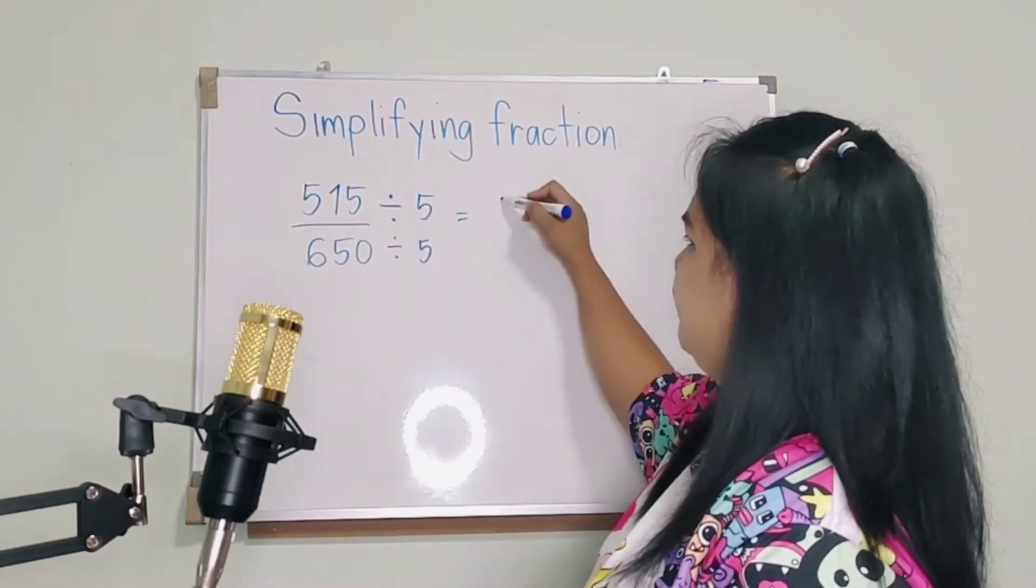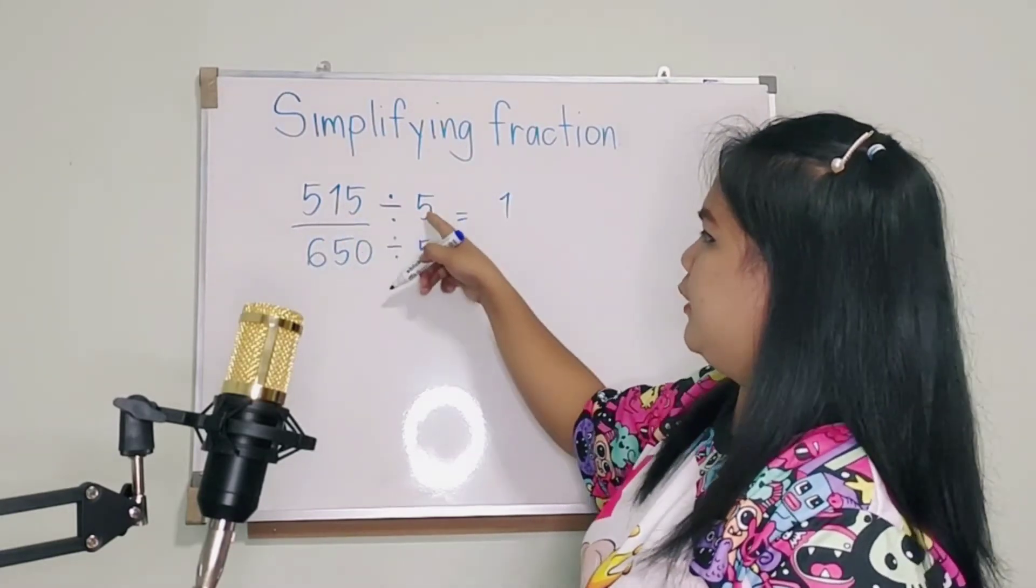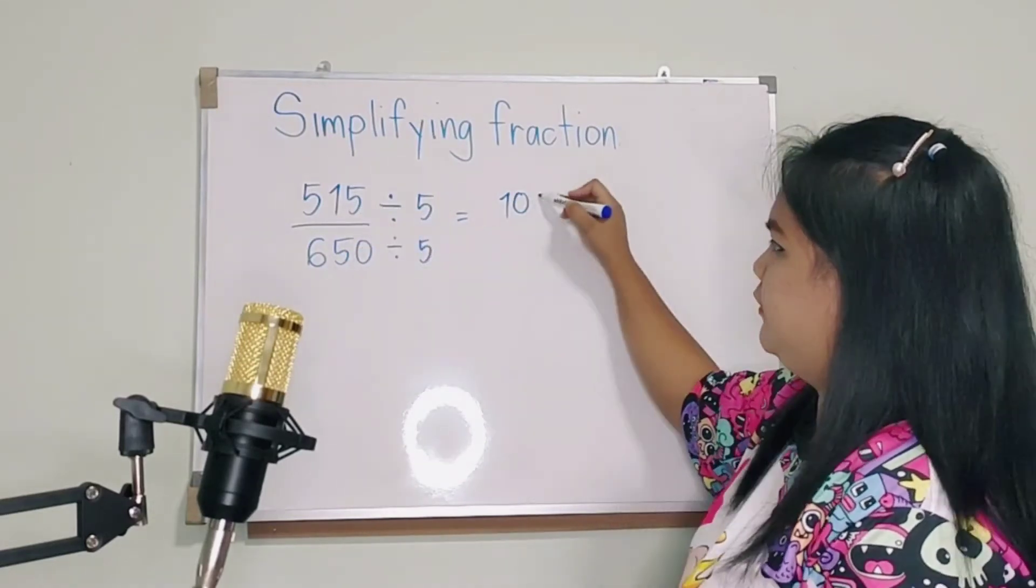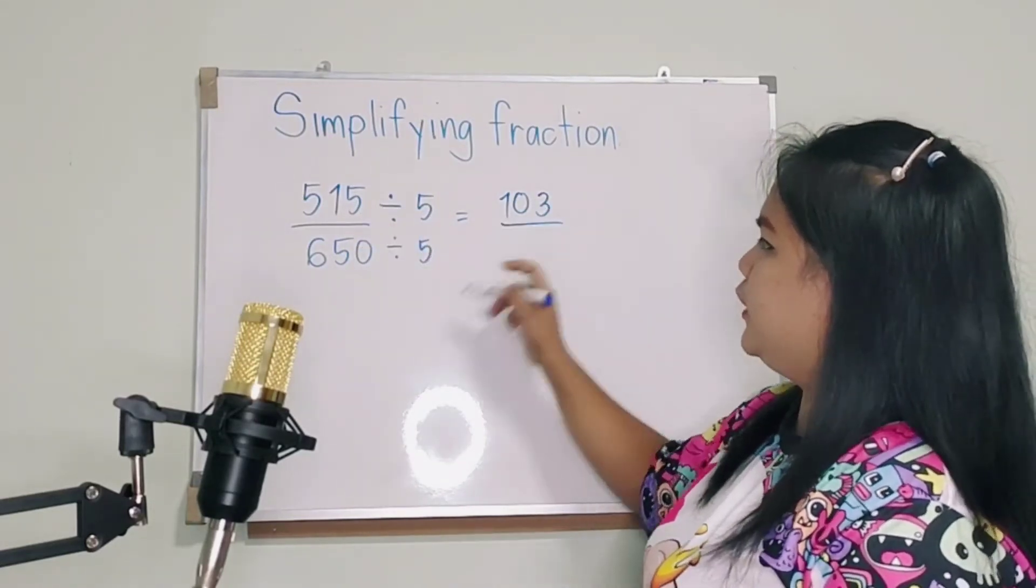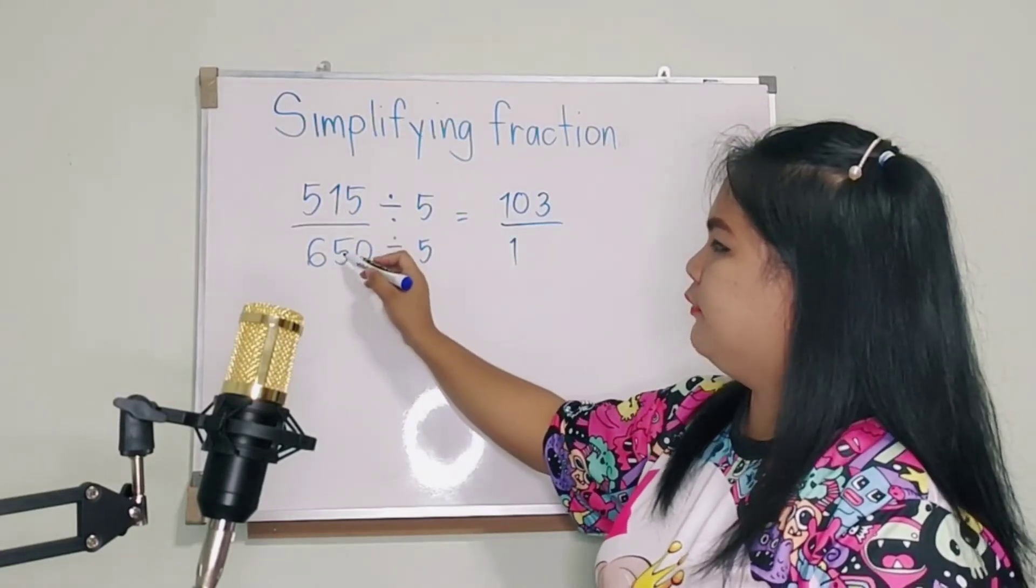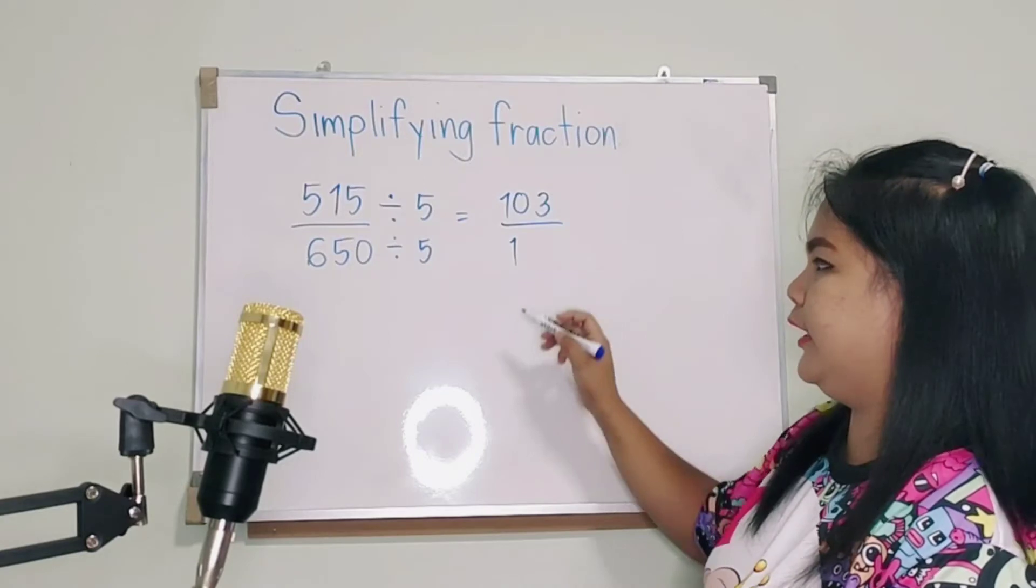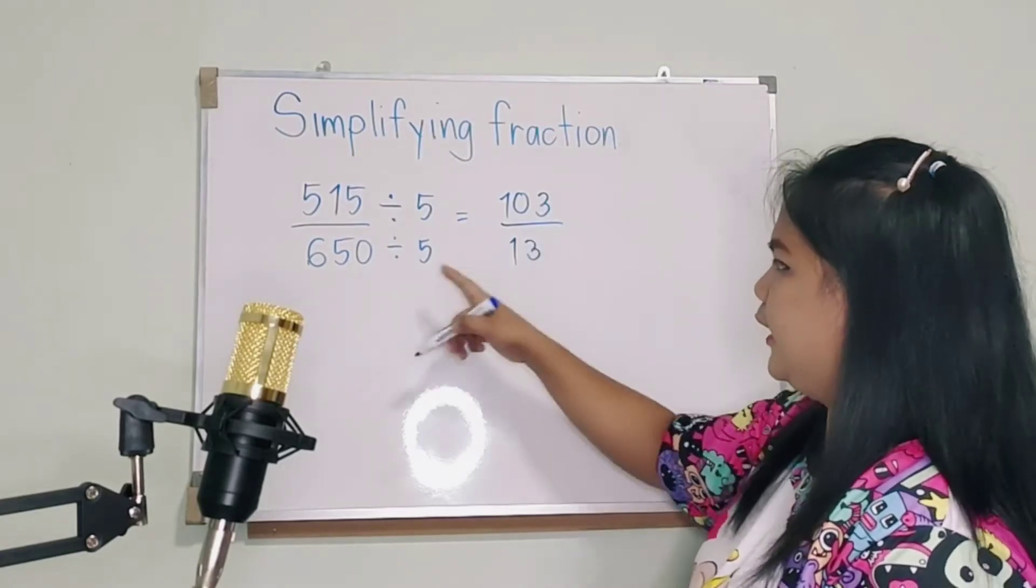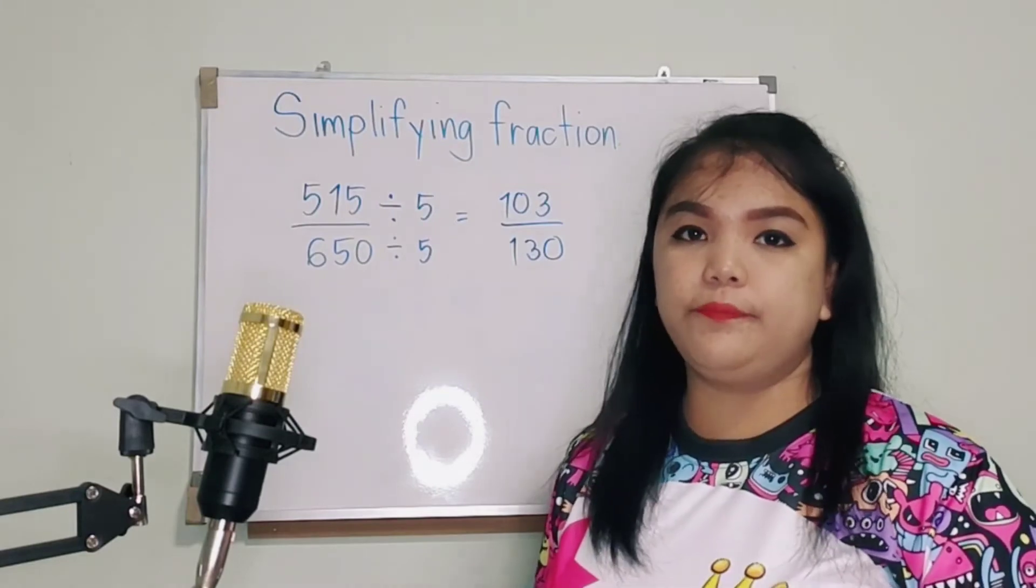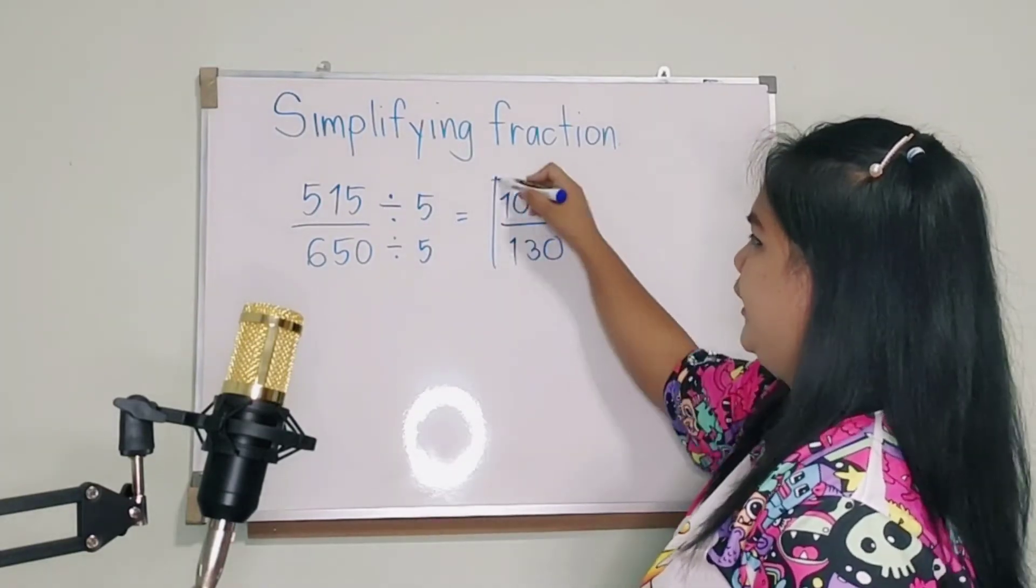5 divided by 5 is 1. 1 divided by 5 is 0. 15 divided by 5 is 3. Over. 6 divided by 5 is 1, carry 1. 15 divided by 5 is 3 and 0. So do you think is there any number left? No more. So that will be our answer.